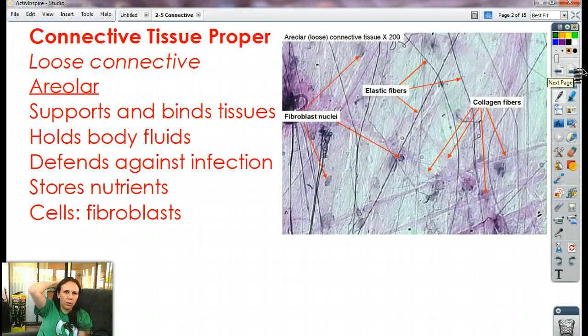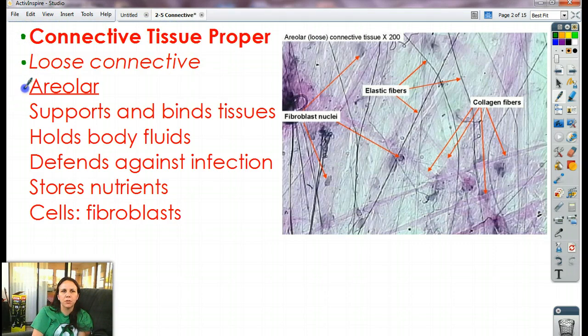Okay, so for each page, I'm putting the main category, subcategory, sub-subcategory under it. So under connective tissue proper, under the category of loose connective tissue, we have what's called areolar connective tissue. Areolar's job is to support and bind tissues. It holds onto body fluids, defends against infection, stores nutrients. The cells that we find in areolar tissue would be fibroblasts. So let's take a look at the picture, see what we can find.